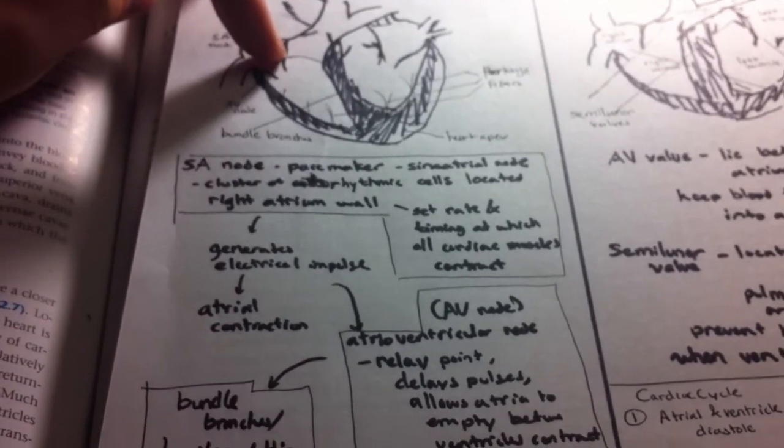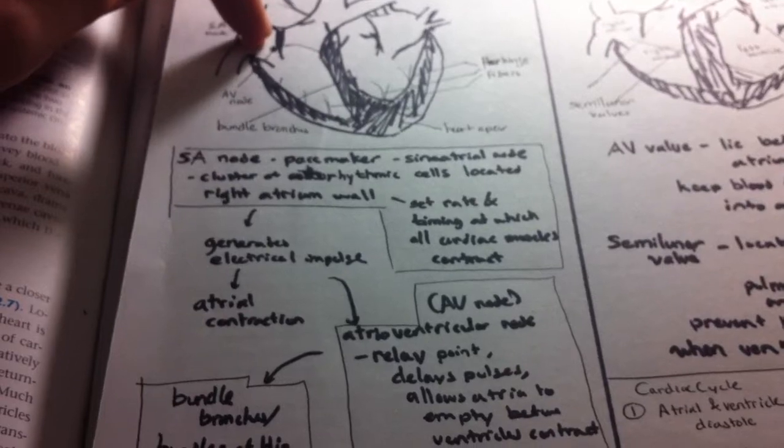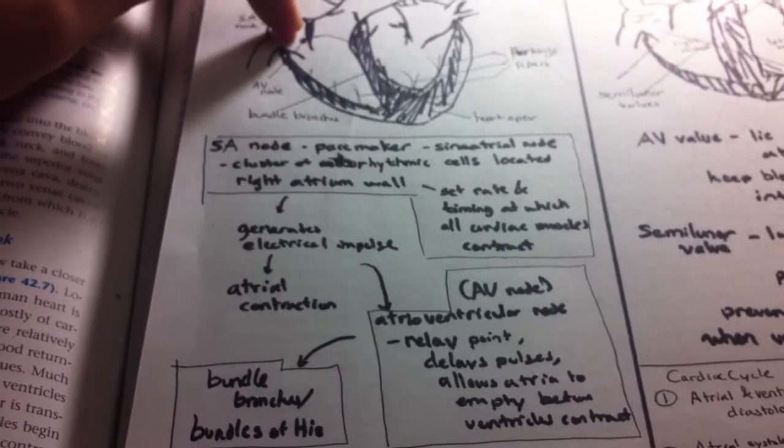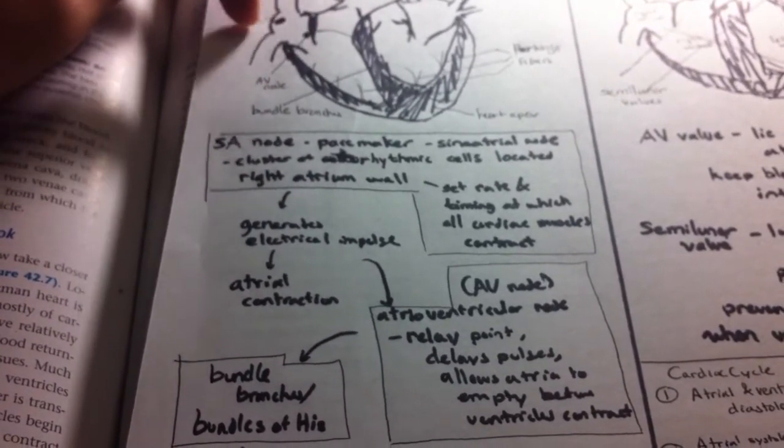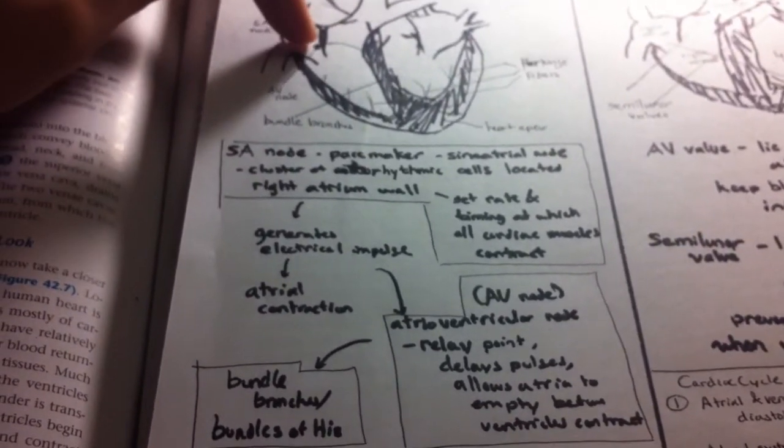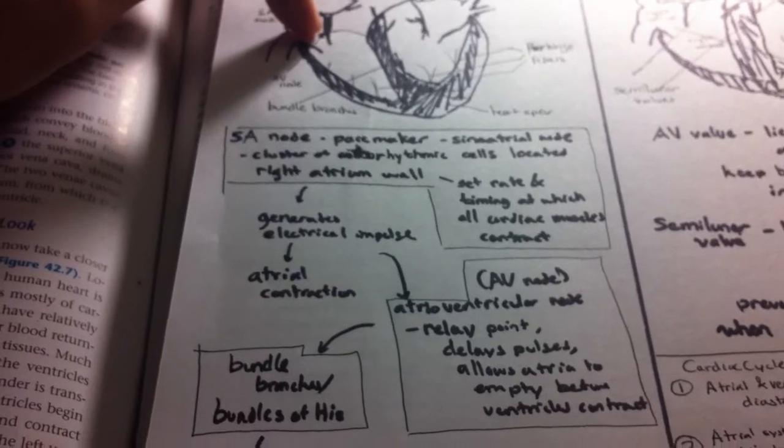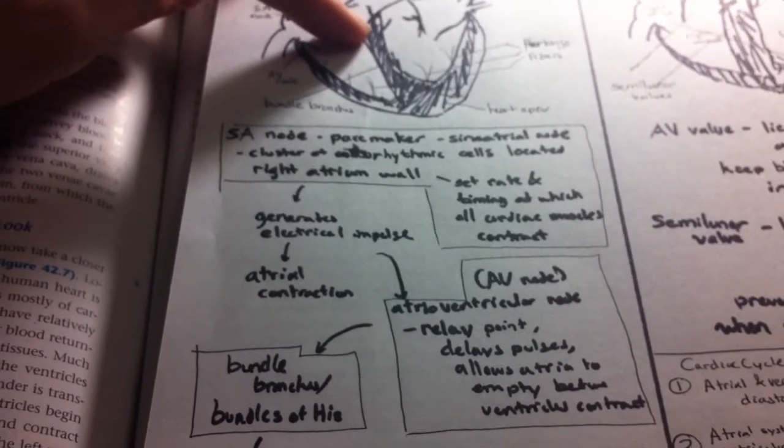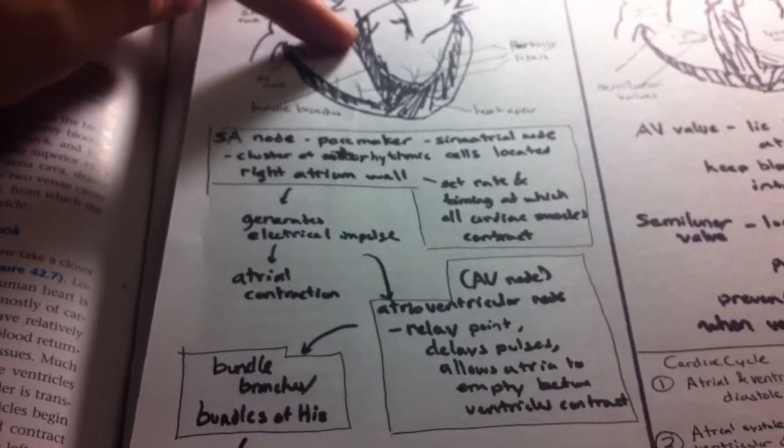It's going to delay the pulse so it allows the entire atria to empty before the ventricles start to contract. Now after the AV node, the electrical impulse goes through this wall where we have bundle branches or bundles of His.